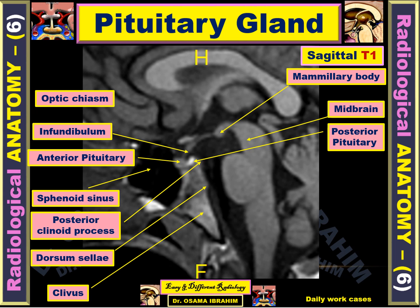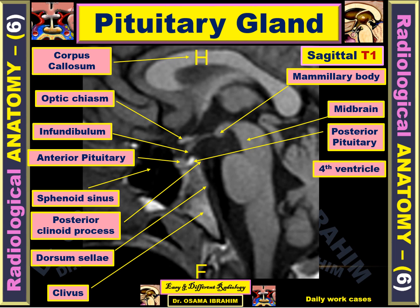The optic chiasm is anterior to the pituitary gland, anterior to the infundibulum. The corpus callosum is composed from the anterior body and the splenium posteriorly, with the most anterior and inferior structure called the rostrum. The fourth ventricle is located between the cerebellum and the pons. The tuber cinereum is the gray matter structure located between the mammillary body posteriorly and the optic chiasm anteriorly.